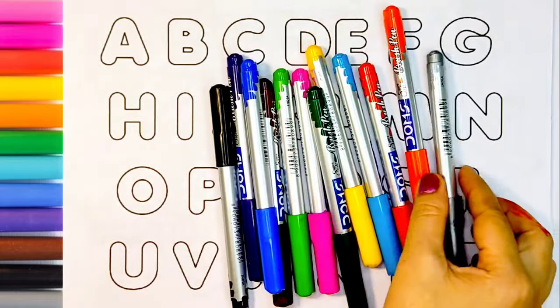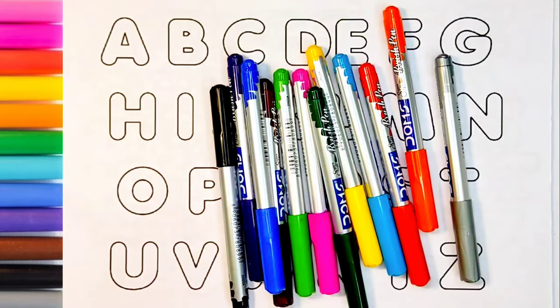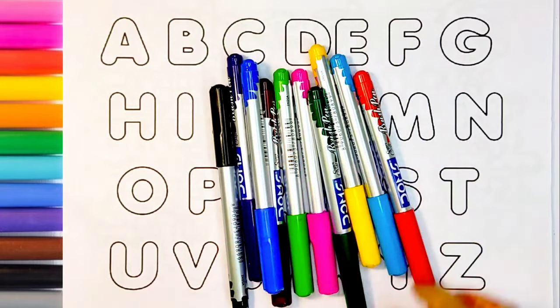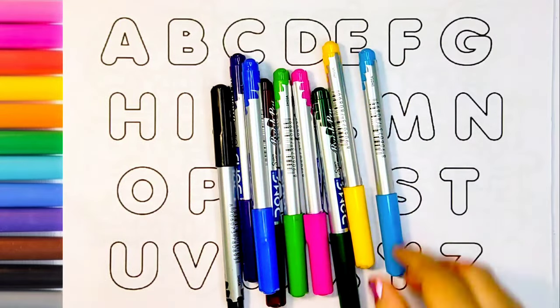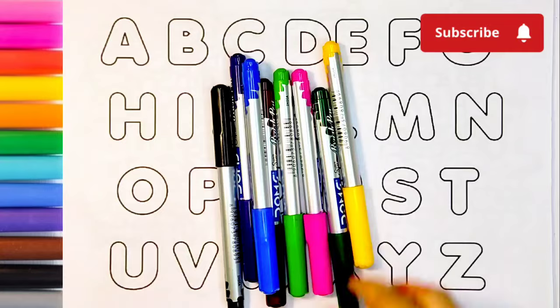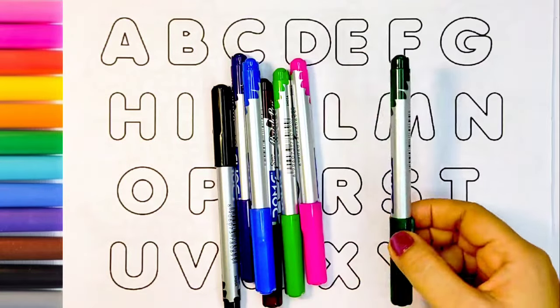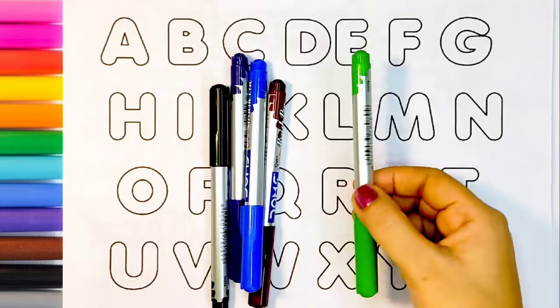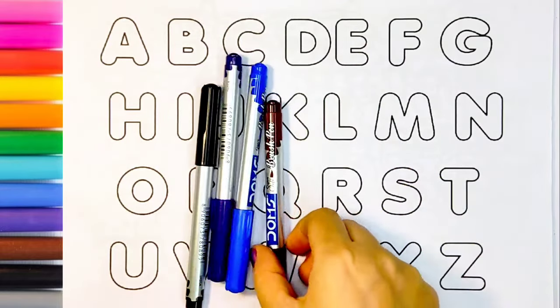Hello kids, today we will learn color names and the alphabet. Gray color, orange color, red color, sky blue color, yellow color, dark green color, pink color, light green color, brown color.